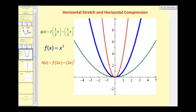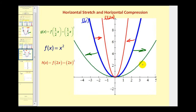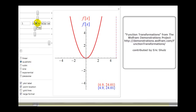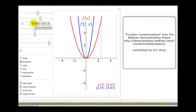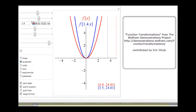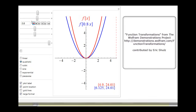Looking at these three graphs, we again have the original function in blue. When b equals two, we have a horizontal compression — compressing it to obtain the red function f of two x. When we stretch the blue function horizontally with b equal to one-half, we get the green function. The animation confirms: when b is greater than one we have a horizontal compression, and when b is between zero and one we have a horizontal stretch.